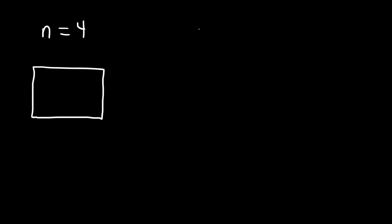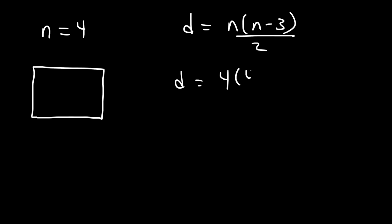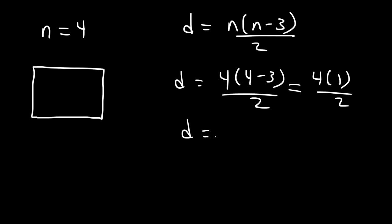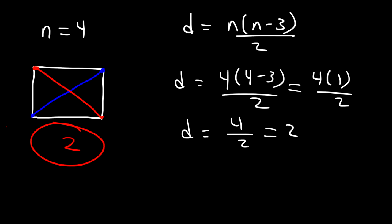Now let's talk about a four-sided figure like a quadrilateral, square, or rectangle. In this case n is equal to 4. Using the formula, it's going to be 4 times 4 minus 3 divided by 2. 4 minus 3 is 1, so we have 4 divided by 2, which is 2. Starting with one point we can draw a diagonal — that's 1 — and from another point we can draw a second diagonal. So there are two diagonals for any four-sided figure: a quadrilateral, square, rhombus, rectangle, kite, or trapezoid.